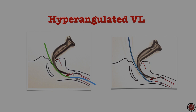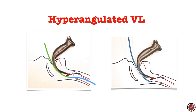The term video laryngoscopy is very heterogeneous. Simply, there are two types of blades: standard geometry or Macintosh blades, and hyperangulated blades. An important point is when NOT to use a bougie straight out of the package — do not use a straight bougie with coude tip with a hyperangulated blade. The hyperangulated blade is a 'around the corner' device, and even with a pillow bend, the bougie will not work and you will be disappointed.